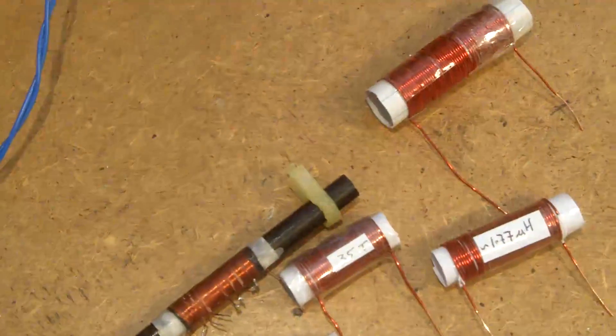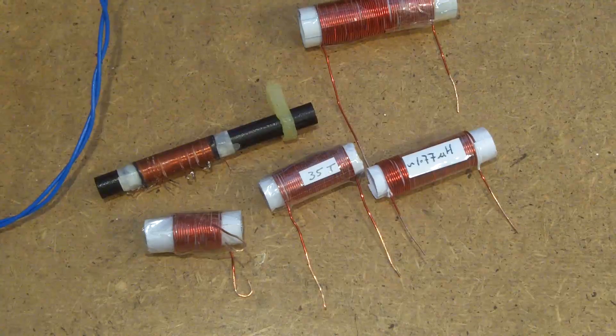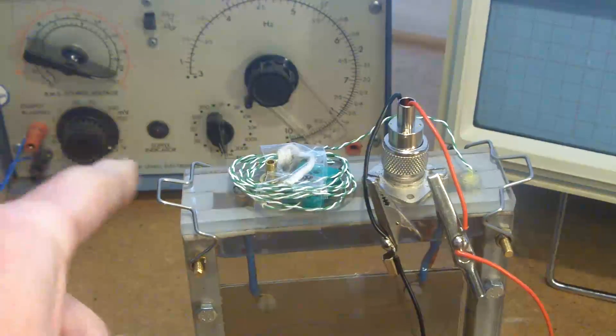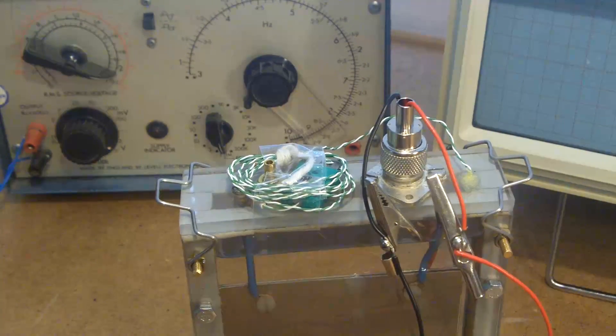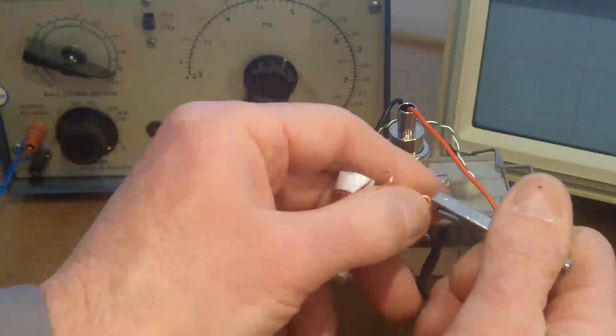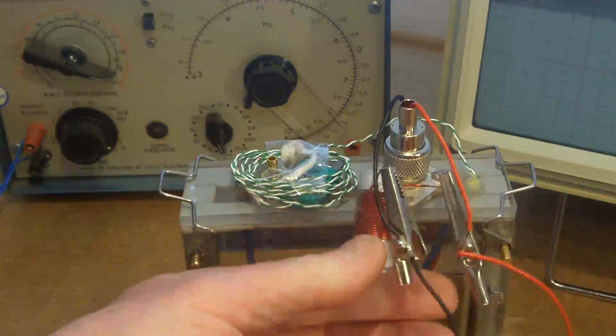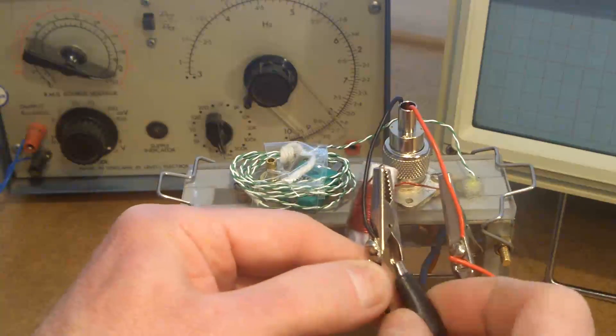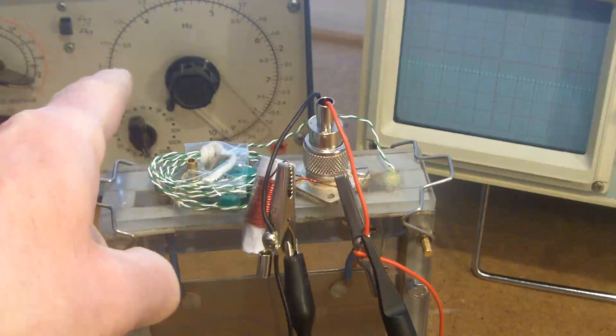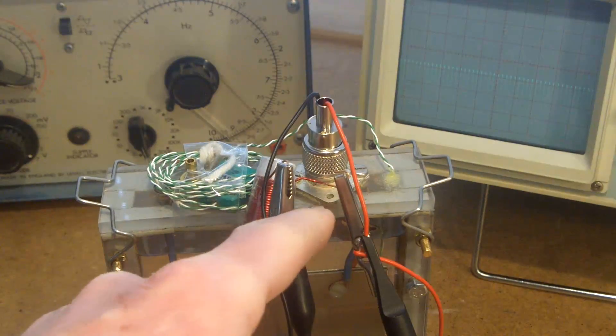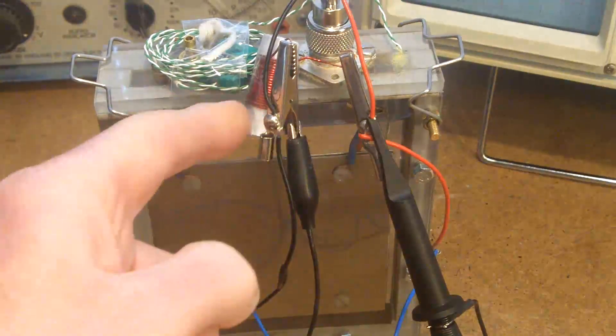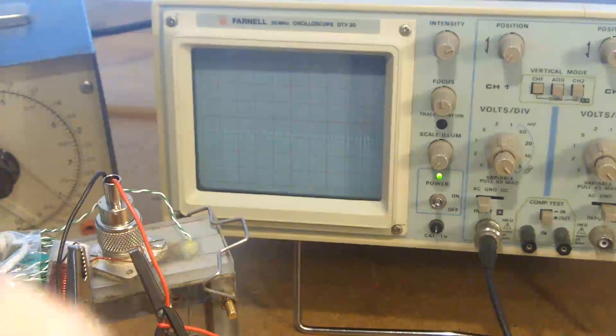Those wires are coming to these two crocodile clips here and then into the cell. What I'm going to be doing is connecting some of these coils across the two crocodile clips on the cell. I'm going to be firing a signal from the signal generator into the cell with a coil connected across here. The resulting signal will be displayed on the oscilloscope.